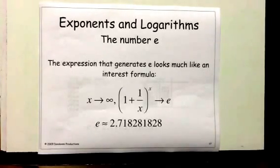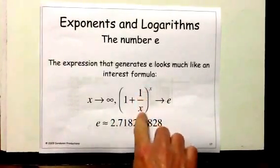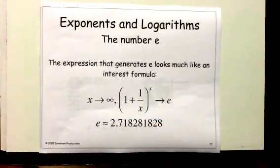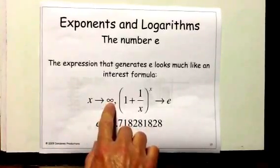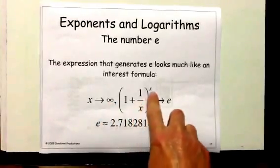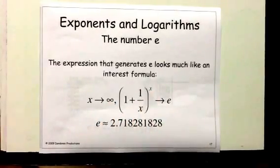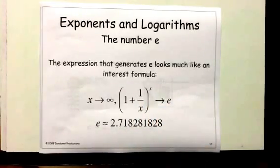Here's what e is. The expression that generates e looks a lot like an interest formula, where you have 1 plus 1 over something—it would be R over N in the interest formula. As x gets very large, closer and closer to infinity, then this expression begins to approach that number e.